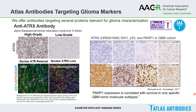A 2017 study examined ATRX, IDH1, P53, and PARP1 in a glioblastoma cohort. They found that PARP1 expression is highly correlated with survival, but only in specific glioblastoma subtypes. This indicated that DNA damage and repair pathways are important for these subtypes and suggested the development of targeted treatments exploiting these mechanisms. Such therapies using PARP1 inhibitors and DNA checkpoint inhibitors are used in clinical trials today.